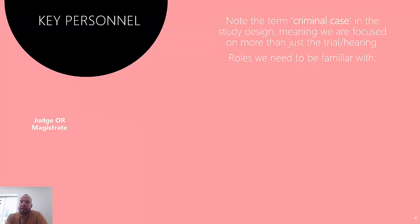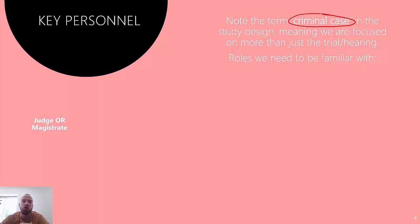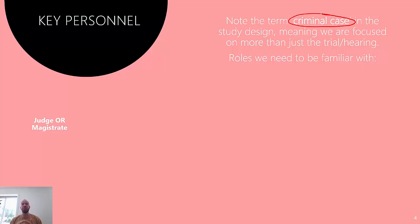The key term here is key personnel in a criminal case. In the old study design, it said criminal trial, and we had to learn about trial responsibility - what these key people were doing specifically within the trial. Now that it's criminal case, we're taking a broader view of the key personnel right through from when someone's charged all the way through to sentencing. We're looking at the entirety of the criminal case, and we'll talk about how these different people interact with each other.